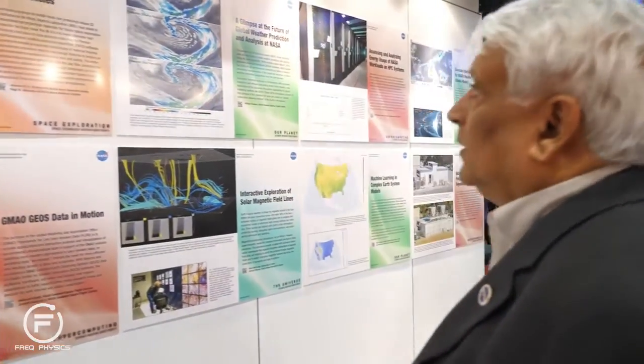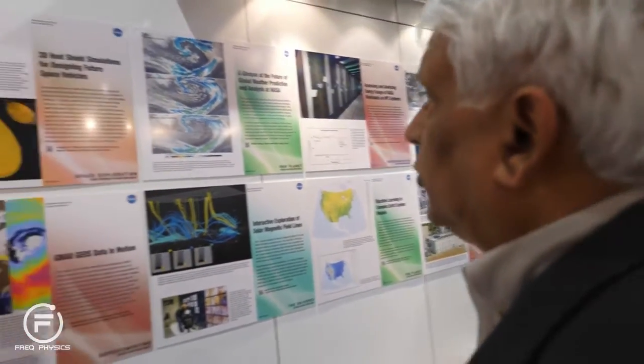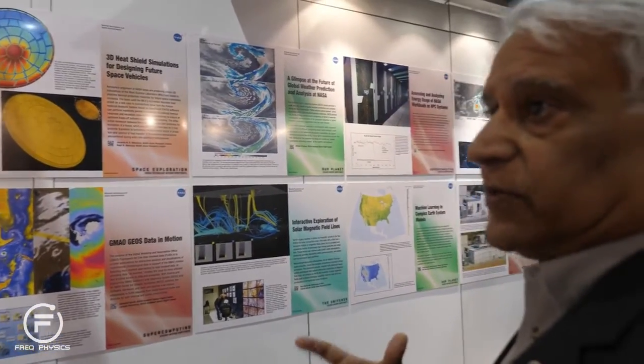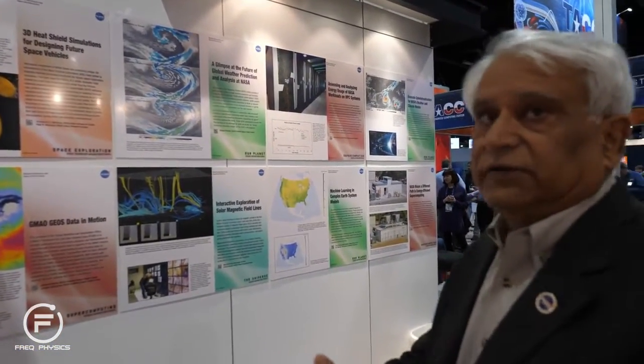This is designing heat shields for space vehicles. Space vehicles, when they come down, have to face a lot of heat. So NASA is looking at different kinds of materials to put in there so that the vehicle will be safe as it comes down in the atmosphere.